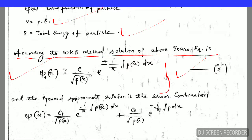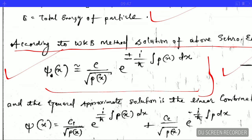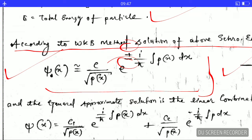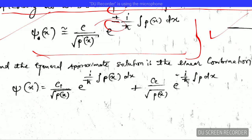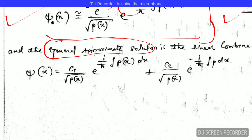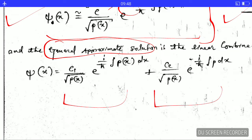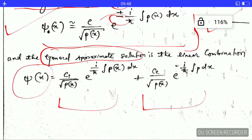You can see that there are two solutions: one when you take the positive sign and one when you take the negative sign. The general approximate solution is the linear combination of these two solutions — this is one solution, this is the other, and their linear combination gives the general approximate solution.